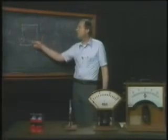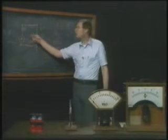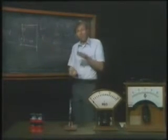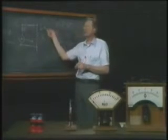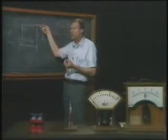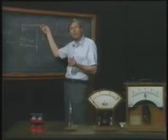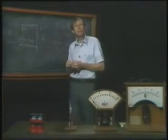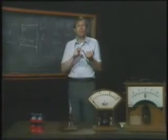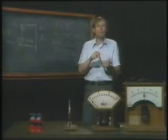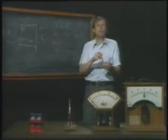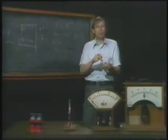The ideal voltmeter should have as large an apparent resistance as possible, so that a minimum amount of current is drained from the circuit during measurement. The ideal voltmeter should have an infinite apparent resistance, while the ideal ammeter should have zero resistance.